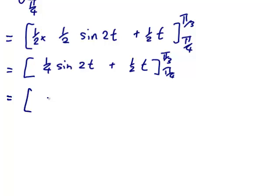That's equal to 1/4 sin 2 times the top one. 2 times π/3 would just be 2π/3 plus 1/2 of π/3 minus